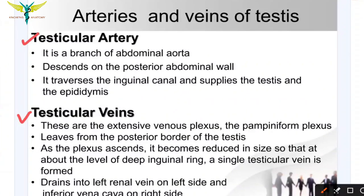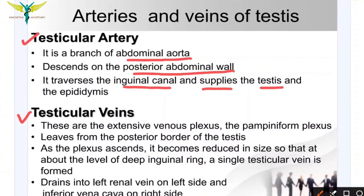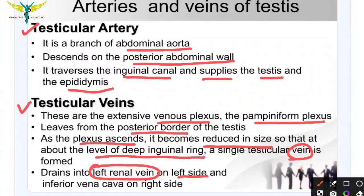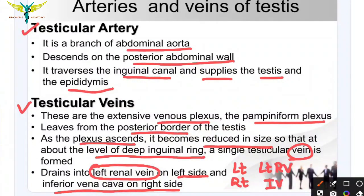The blood supply of the testis comes from the testicular artery, a branch of the abdominal aorta, which descends from the posterior abdominal wall, traverses the inguinal canal, and supplies the testis and epididymis. For venous drainage, extensive plexuses called the pampiniform plexus leave from the posterior border of the testis. As the plexus ascends it reduces in size, forming a single testicular vein at the deep inguinal ring — draining into the left renal vein on the left side and into the inferior vena cava (IVC) on the right side.